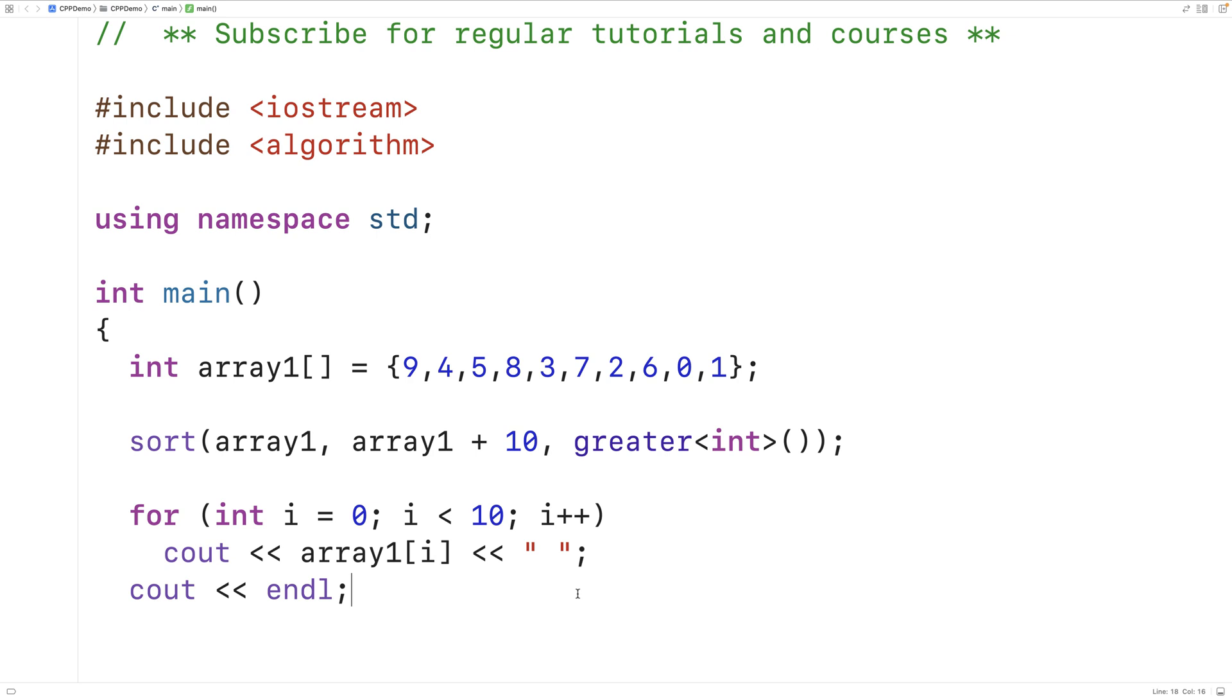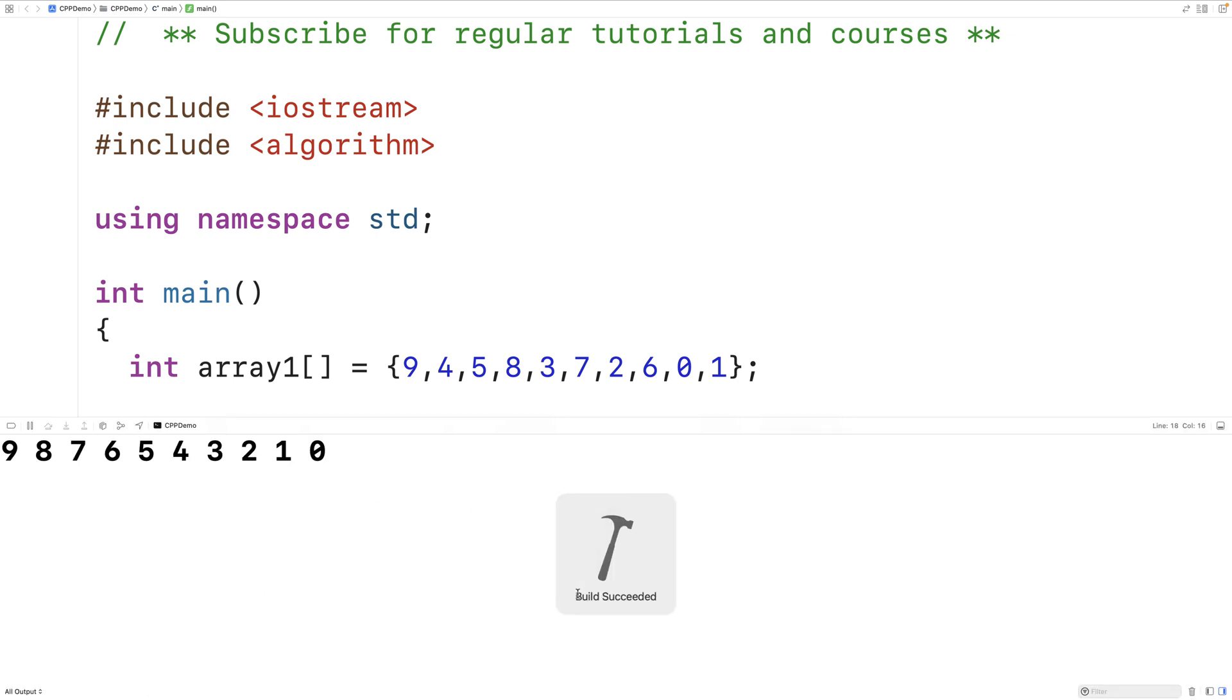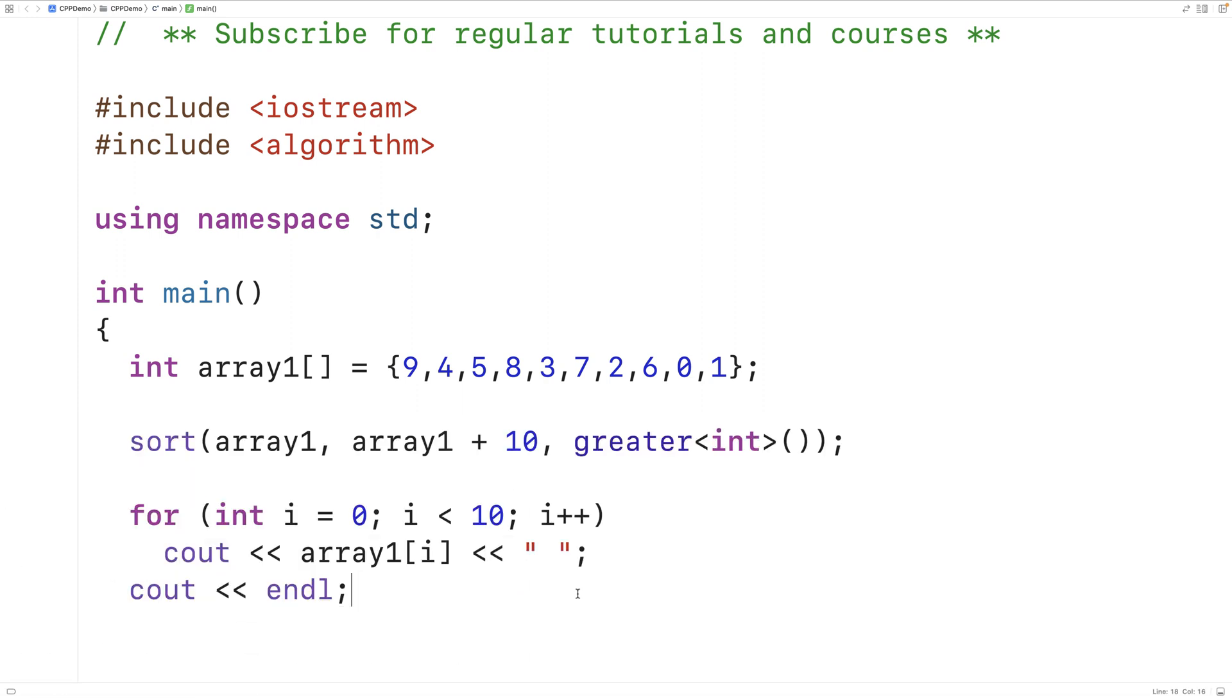If we save it and run it now, the array is now sorted in descending order from 9 to 0. So that's how we can sort things in descending order in the case of values like ints, for example. What we're effectively passing in as a third argument here is a function for the greater operator for ints.